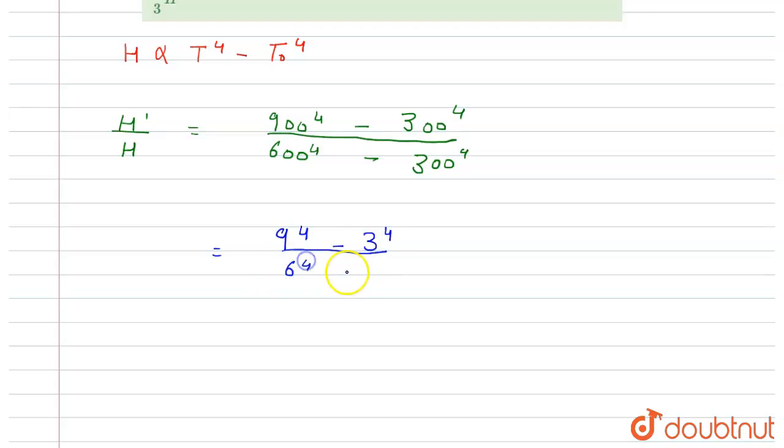6 raised to power 4 minus 3 raised to power 4. Now in this we can take common 3 raised to power 4 and we get 3 raised to power 4 times 3 to the 4 minus 1 divided by 3 raised to power 4 times 2 raised to power 4 minus 1.